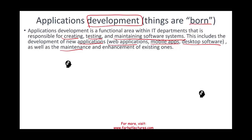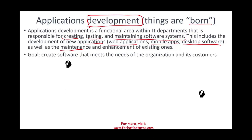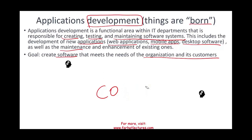The goal of this area is to create software that meets the needs of the organization and its customers. That's what we mean by saying IT is a supporting function — everything that has to do with IT is there to help us meet our need, the company's need and its customers'.